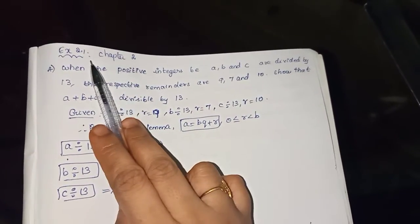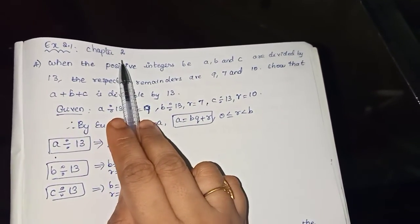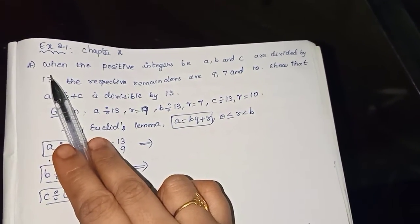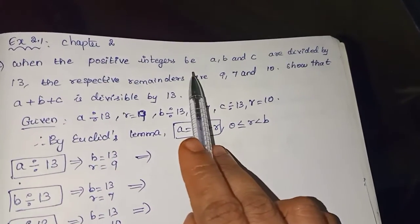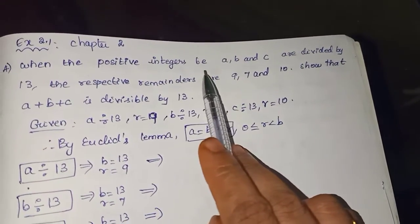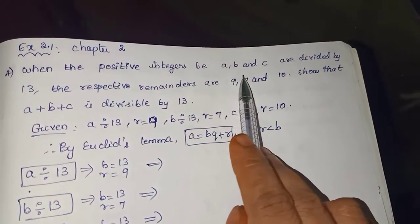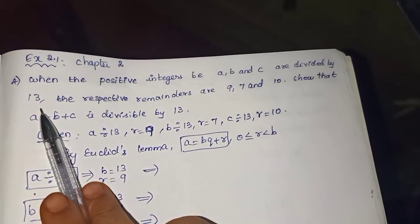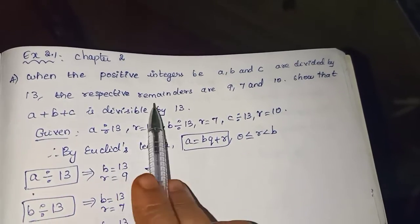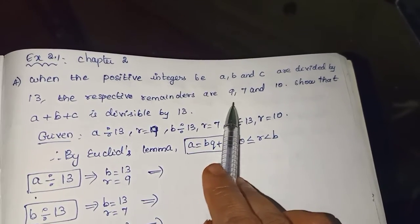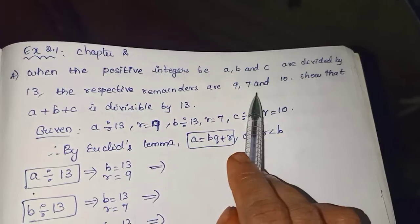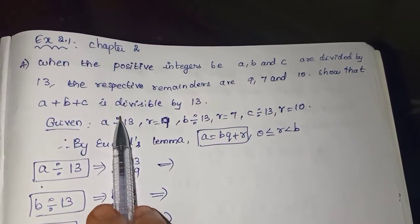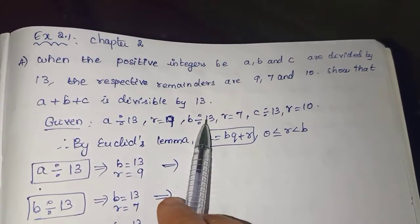Exercise 2.1, chapter 2, 4th sum. When the positive integers A, B and C are divided by 13, the respective remainders are 9, 7 and 10. Show that A plus B plus C is divisible by 13.